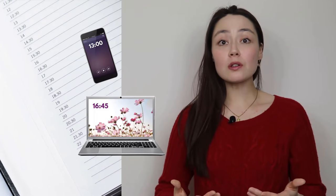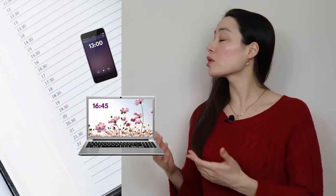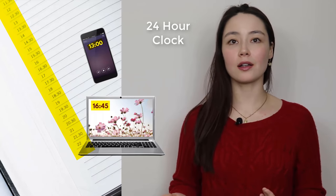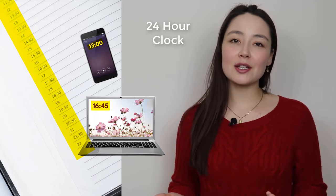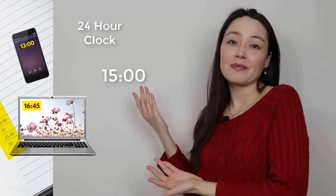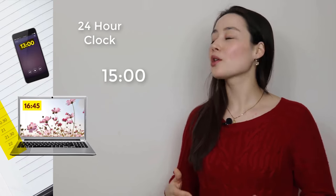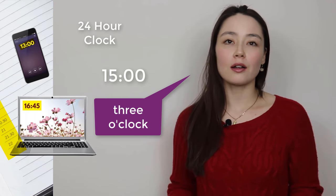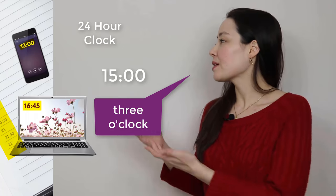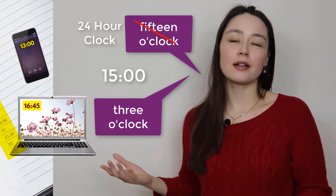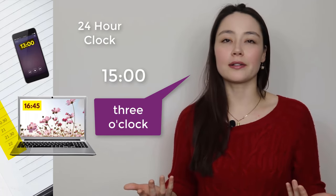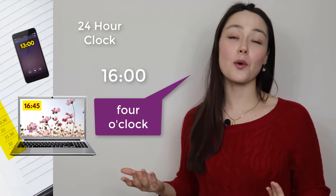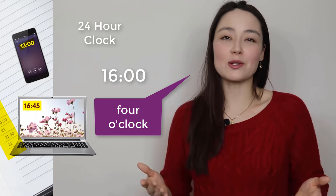Many of our phones, computers, schedules, etc. use the twenty-four hour clock. But in English, for example, we would only say three o'clock. We wouldn't say fifteen o'clock, sixteen o'clock. Three o'clock, four o'clock. That's normal.